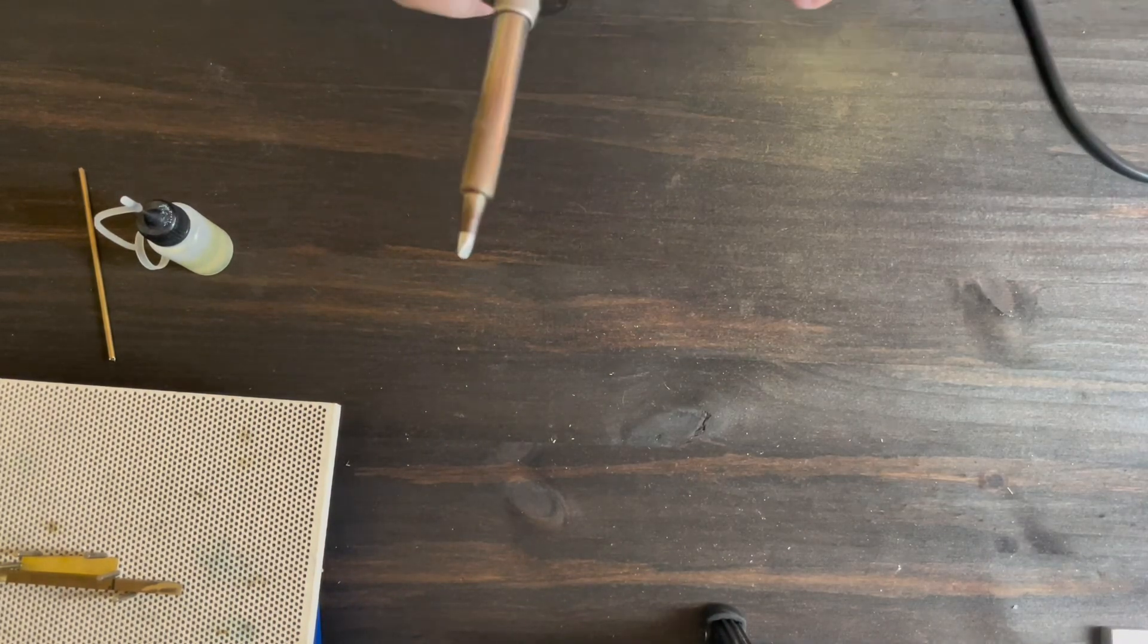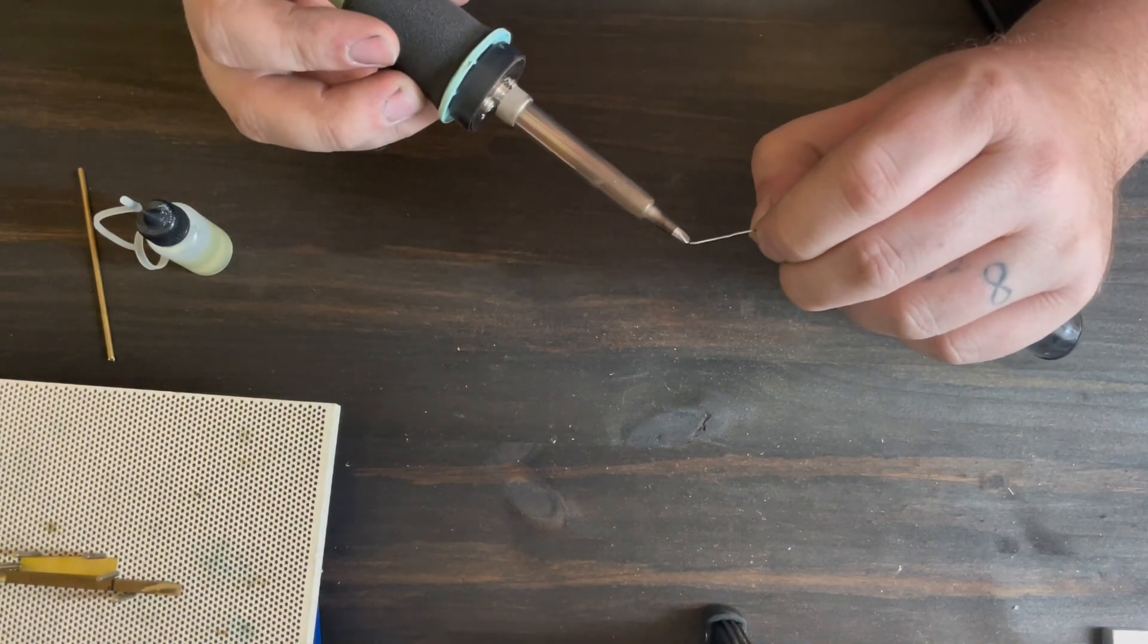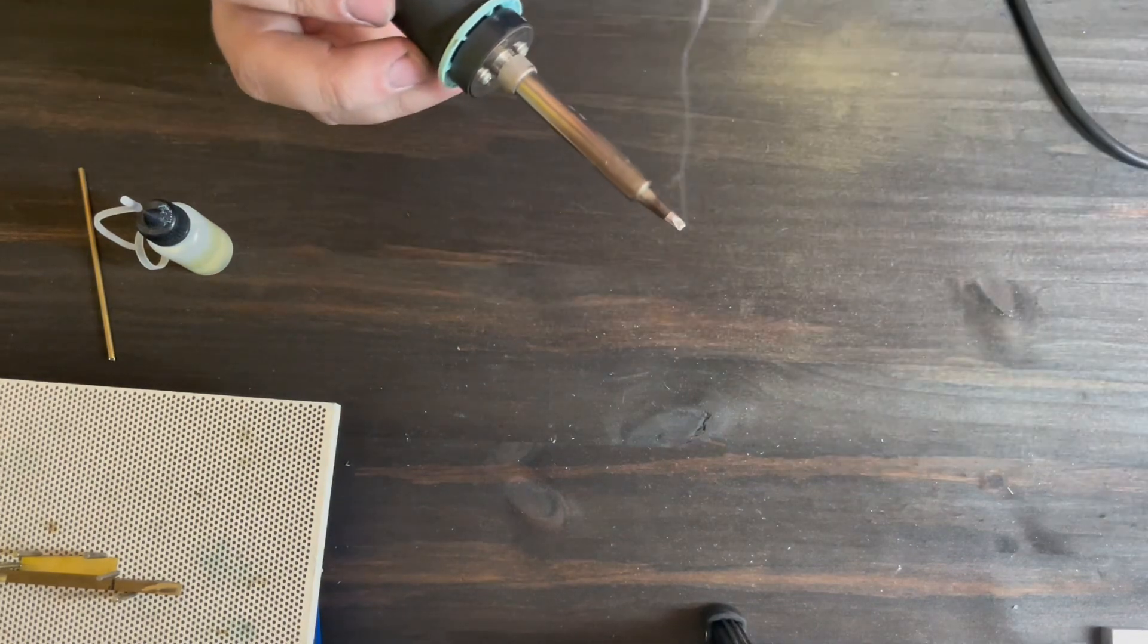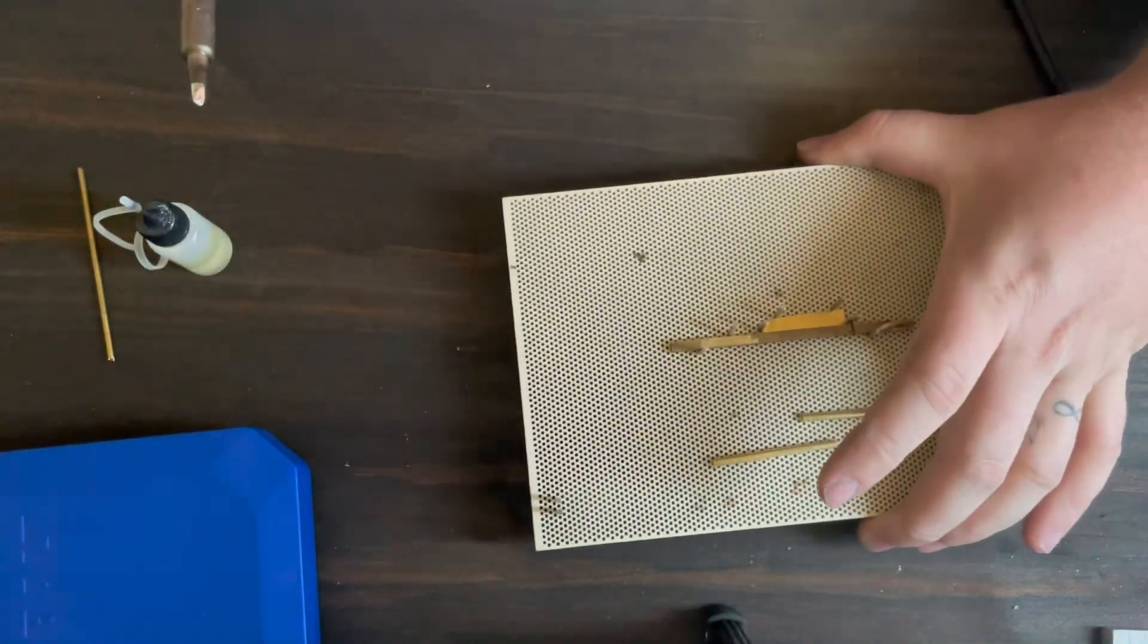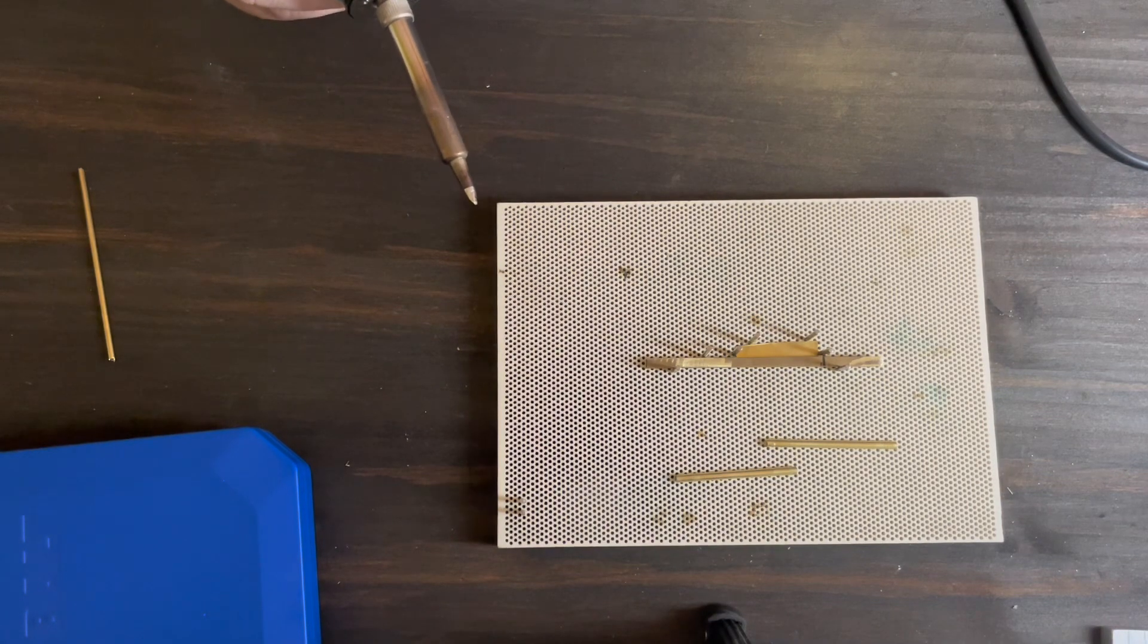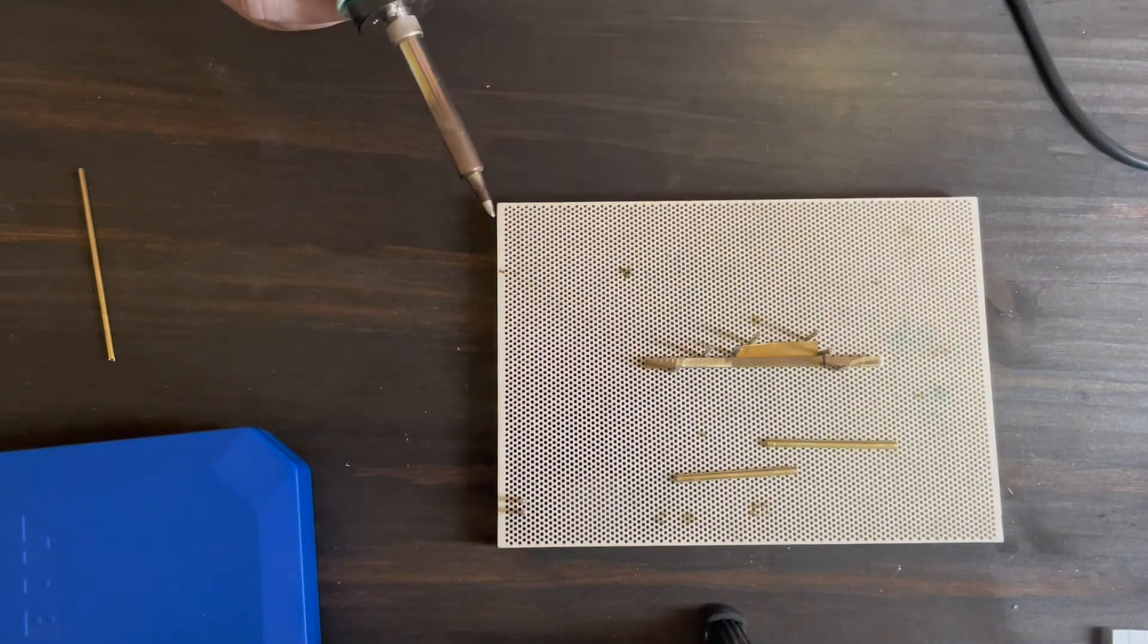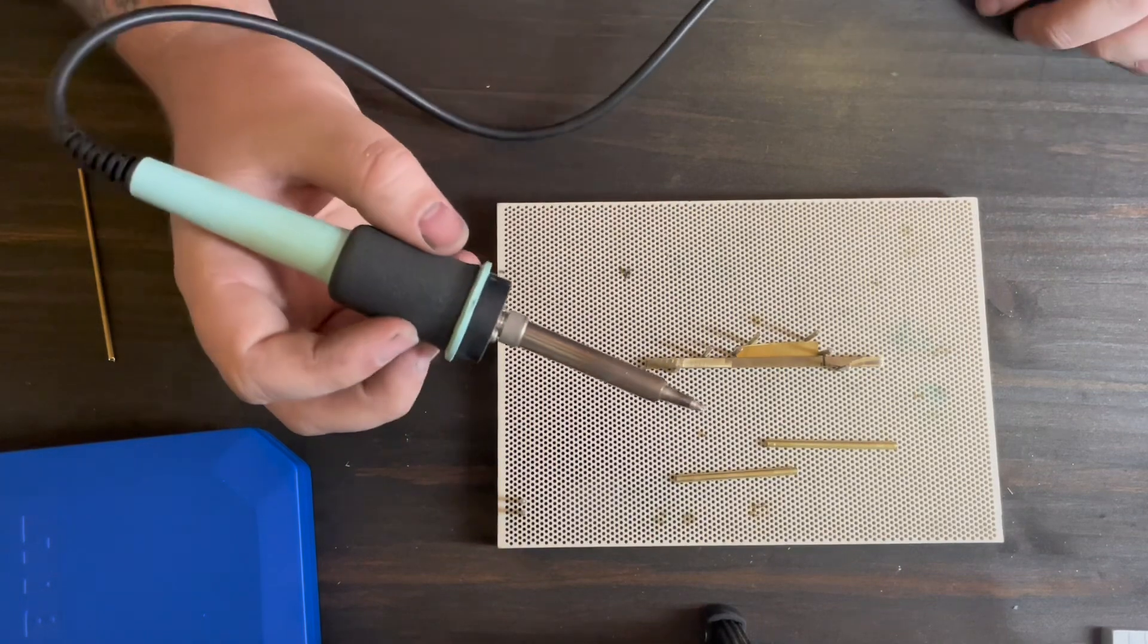And then I'm going to go ahead and use this Kester. I like it better. And I'm just going to put a little bit of solder on there. It's also a good idea if you're going to solder, do it in a well-ventilated area. Whether you got a fan going or a carbon filter. Some people have little fans right here with little carbon filters and it kind of sucks the fumes. Mine's going up and out right now. So I'm good.